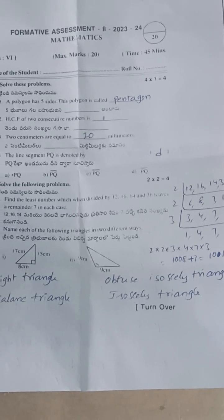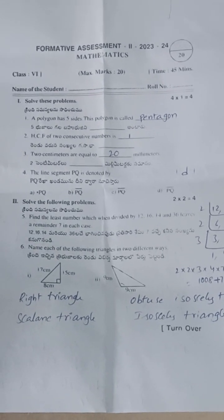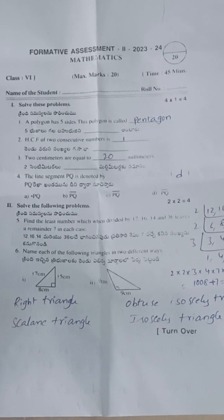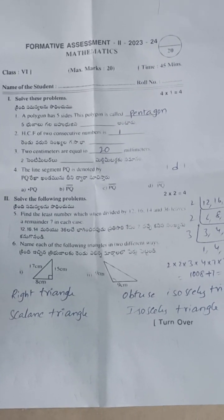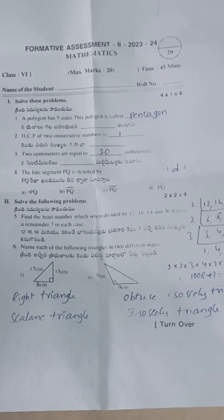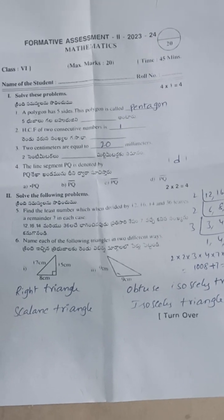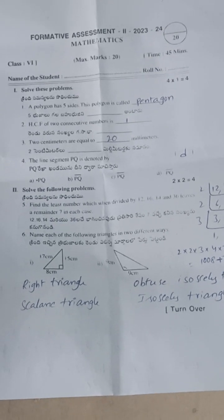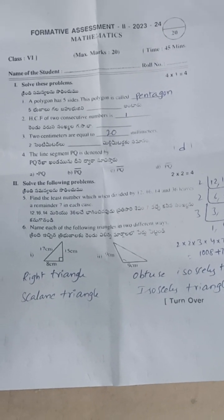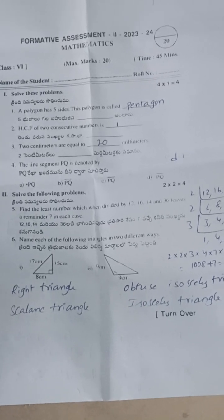Name each of the following triangles in two different ways. The first triangle is a right angle triangle because one angle is 90 degrees. It is also a scalene triangle because all three sides are different.